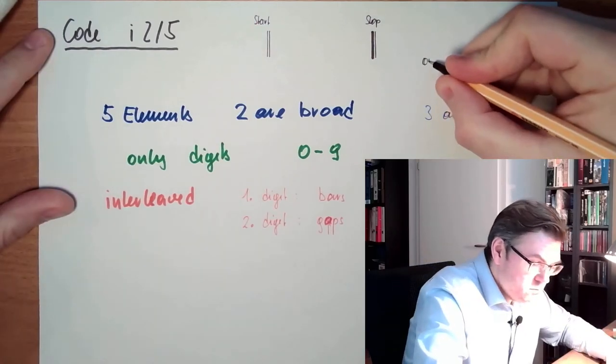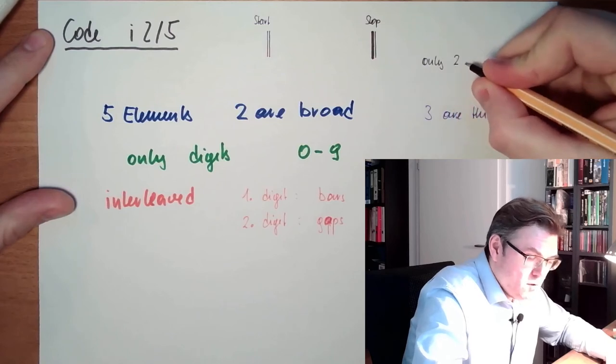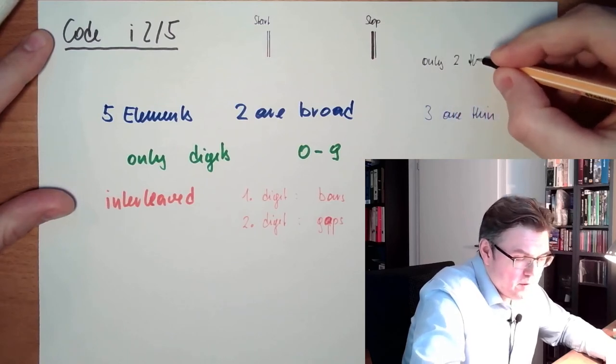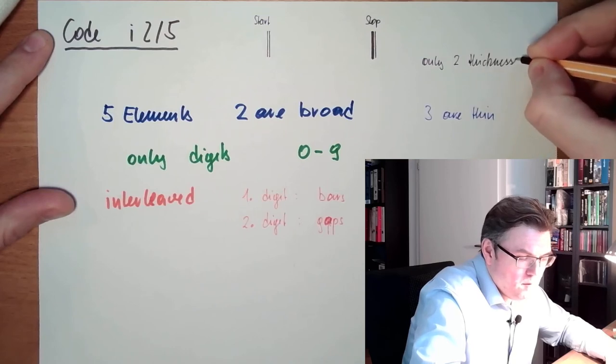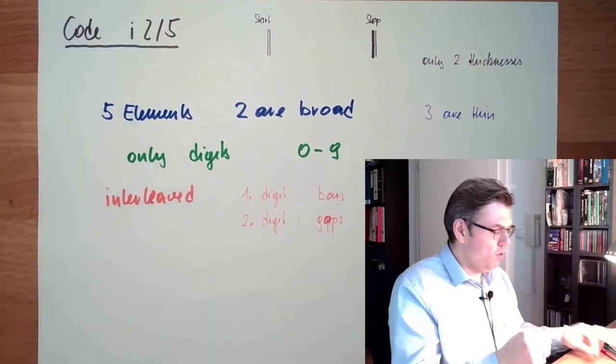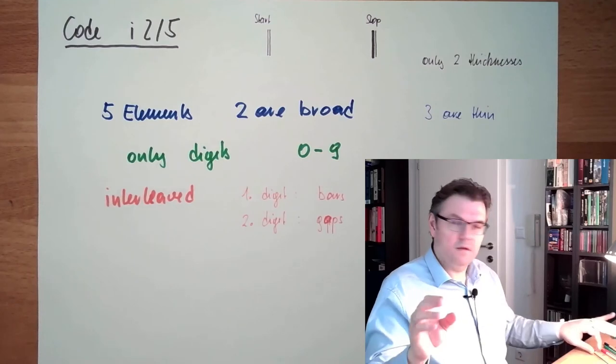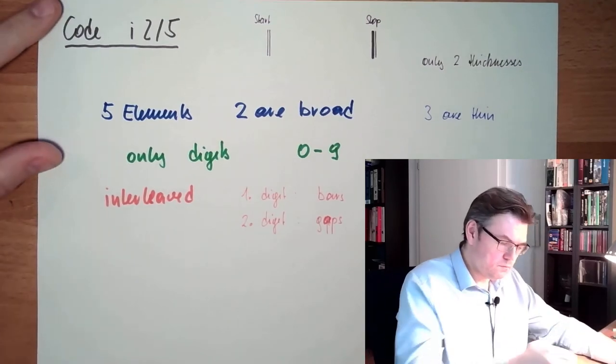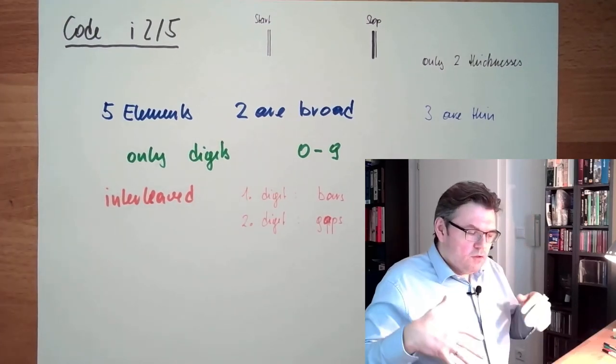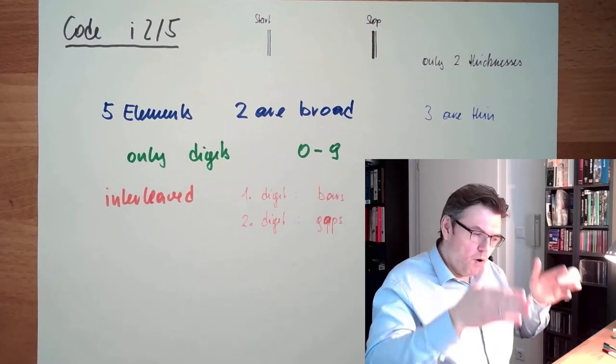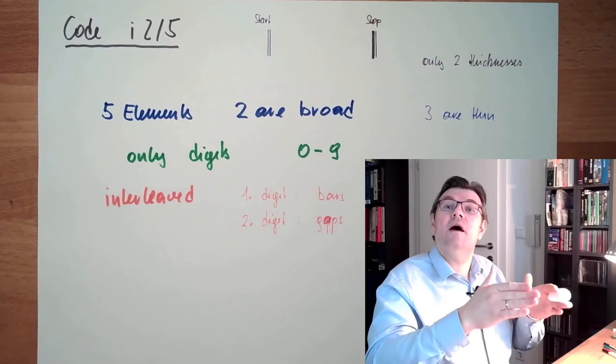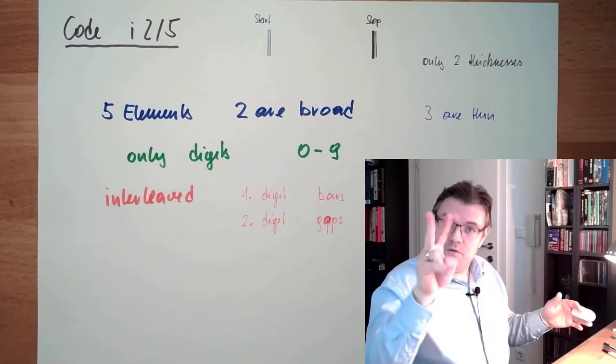Just only two thickness of the bars, broad and small, like in code three of nine. So this coding is interleaved. With one combination of bars and gaps, I do have already two digits.